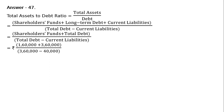Rs. 1,60,000 plus Rs. 3,60,000, whole divided by Rs. 3,60,000 minus Rs. 40,000, equals Rs. 5,20,000 divided by Rs. 3,20,000, which equals 1.625 : 1. This is the final answer.